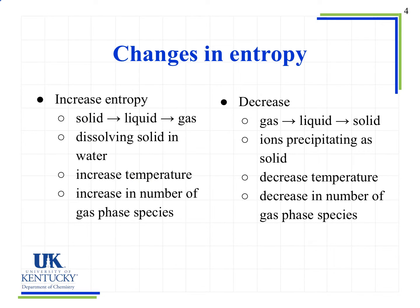We also see an increase in entropy when we look at a reaction and there is an increase in the number of gas phase species. So if we increase the number of gas phase species — for example, having one gas phase species on the left side of the reaction versus two on the right — we see an increase in entropy for that reaction.